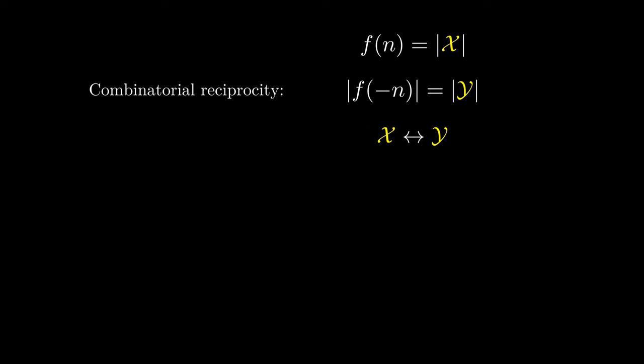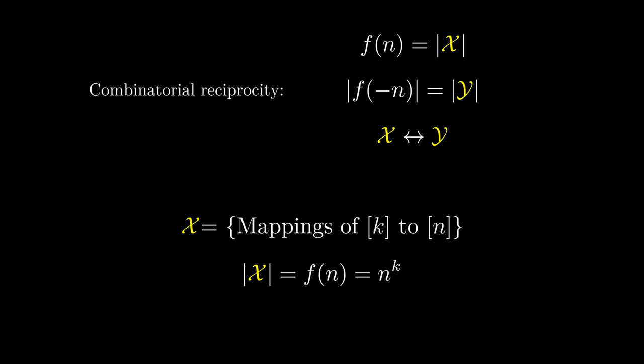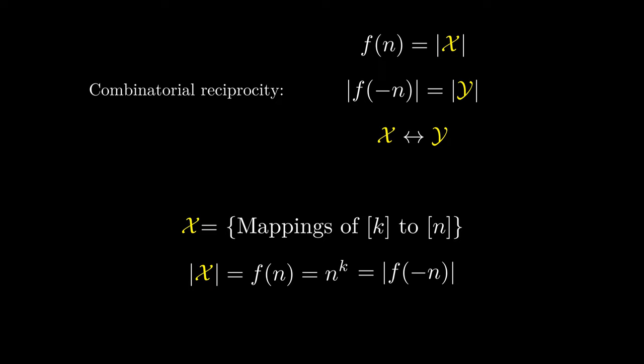Remember that there are many different examples of combinatorial reciprocity, and this is only one of them. To show some of the potential power of combinatorial reciprocity, I'm going to go over several more examples, but unfortunately due to video length, I will have to skip over their proofs. Please continue to be critical and curious, but don't expect rigorous justification for each presented conclusion. My first combinatorial class X counts the number of ways to map k to n, which happens to be n to the power of k. A negative input into this function gives us n to the k again, which corresponds to the same combinatorial class — in other words, its combinatorial reciprocity theorem relates it to itself.